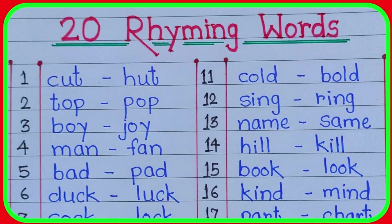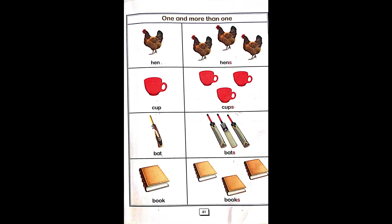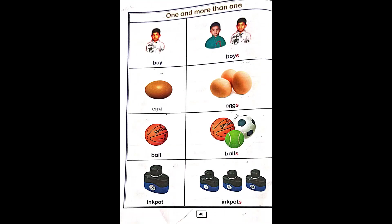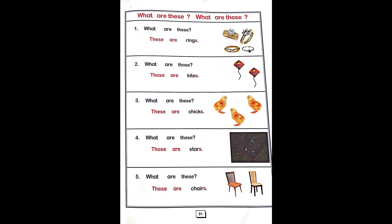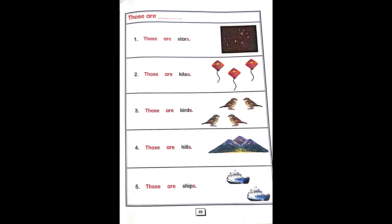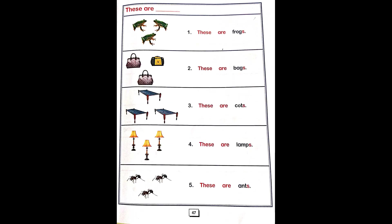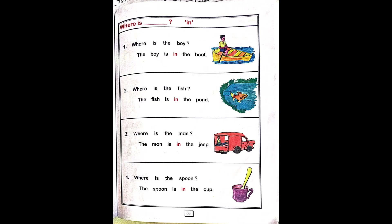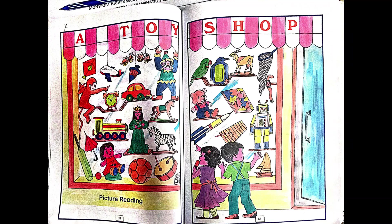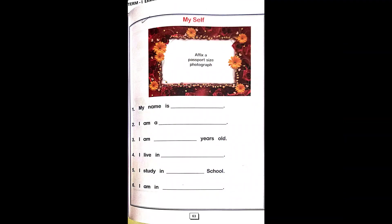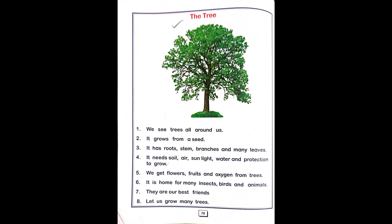The UKG syllabus also covers: naming pictures, rhyming words, action words, one and more than one, singular and plural, statements with 'this' and 'that', 'these' and 'those', question answers with 'this and that' and 'these and those', answering questions using 'in', 'on', 'under', opposite words, picture reading, naming toys in a toy shop scene, speaking confidently and writing on the topic 'Myself', picture reading and writing an essay on the topic 'The Tree'.